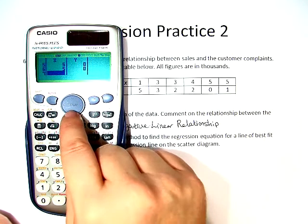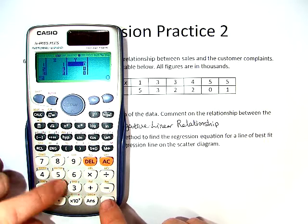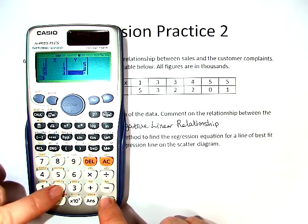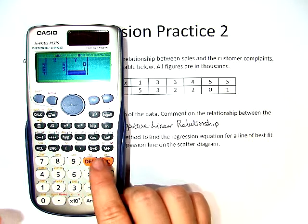We notice there's only 6 numbers here. You hit the down arrow to go back up to the top. Move it over. 5, 3, 2, 2, 0, 1. And to go back to the main screen, we hit AC.